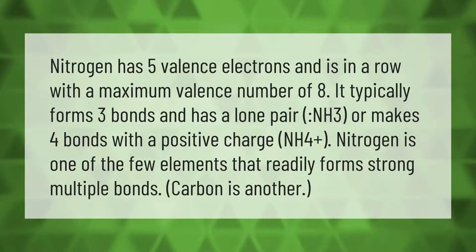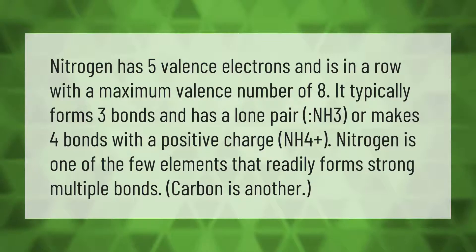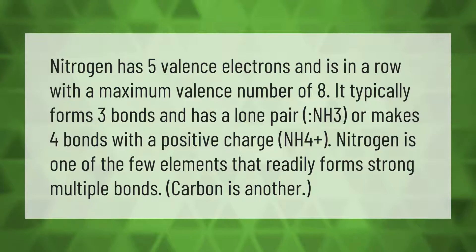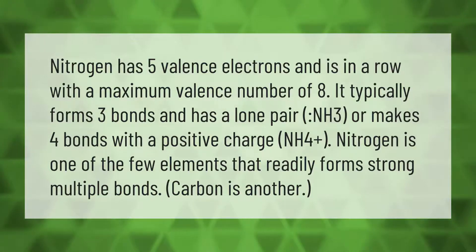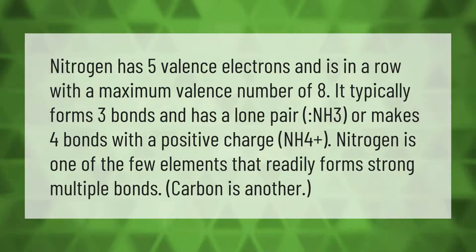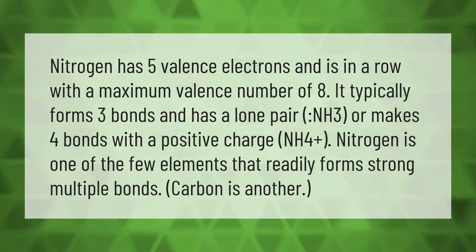Nitrogen has five valence electrons and is in a row with a maximum valence number of eight. It typically forms three bonds and has a lone pair — NH3 — or makes four bonds with a positive charge — NH4 plus. Nitrogen is one of the few elements that readily forms strong multiple bonds; carbon is another.